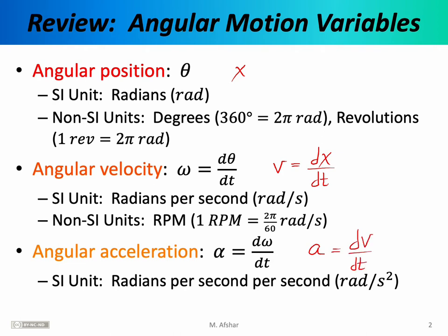There's a great deal of similarity between the angular motion variables and the linear motion variables. In particular, the ways in which the angular variables are related to each other are quite similar — in fact, mathematically identical — to the ways in which the linear motion variables are related to each other. The kinematic equations that dictate the behavior of theta, omega, and alpha are very similar to the kinematic equations that relate x, v, and a.